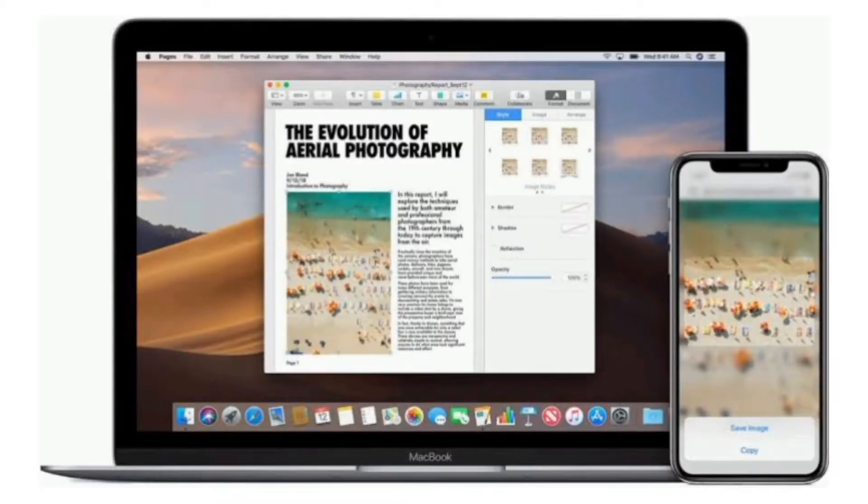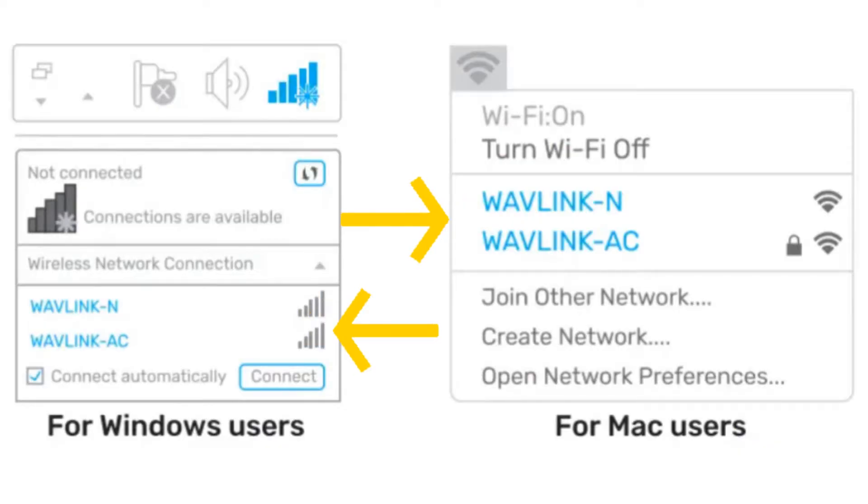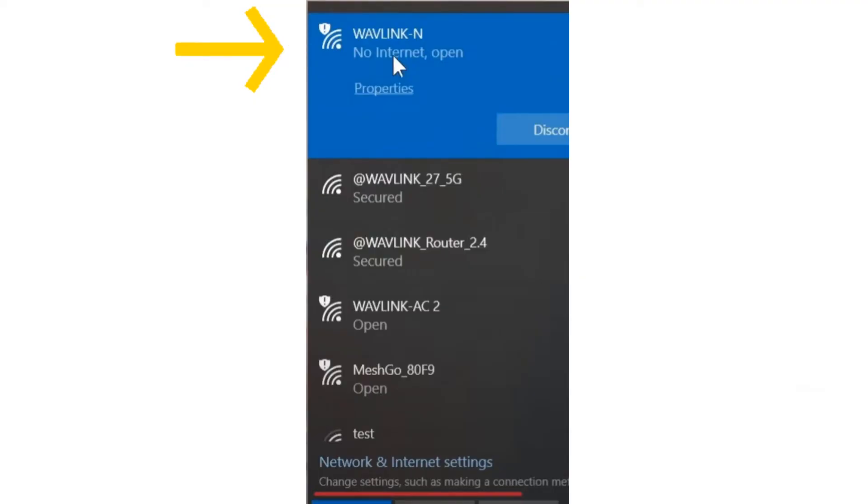Using your phone, Windows computer, or Mac, go to the WiFi list and look for Wavelink Open Network. Connect to it. Once connected, it will say no internet.